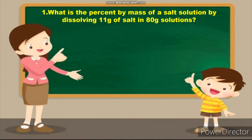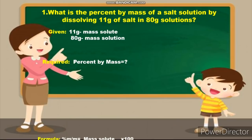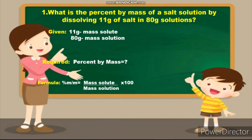In problem number 1, the given are 11 grams, which is the mass solute, and 80 grams, which is the mass solution. What is being asked: percent by mass. And the formula that we are going to use is mass solute divided by mass solution times 100.